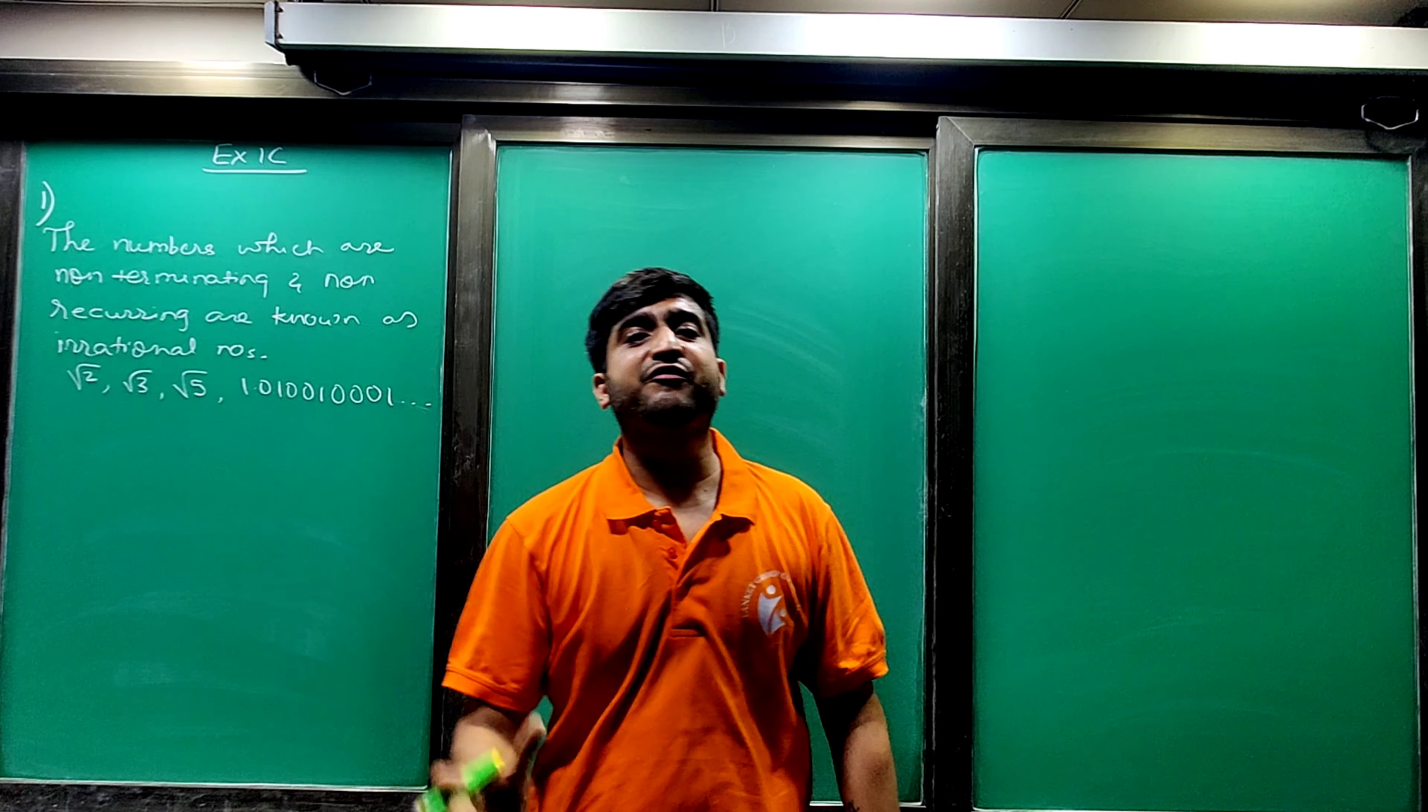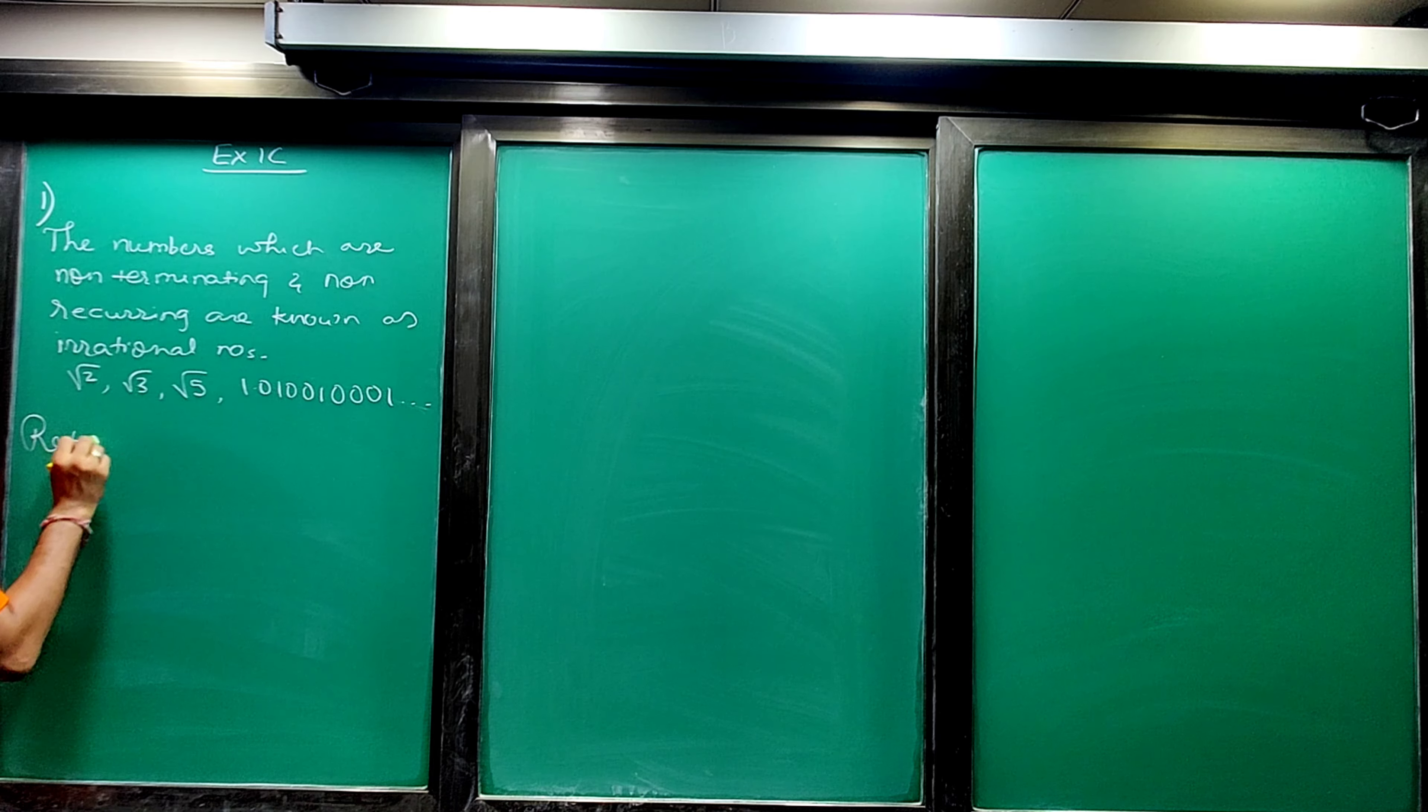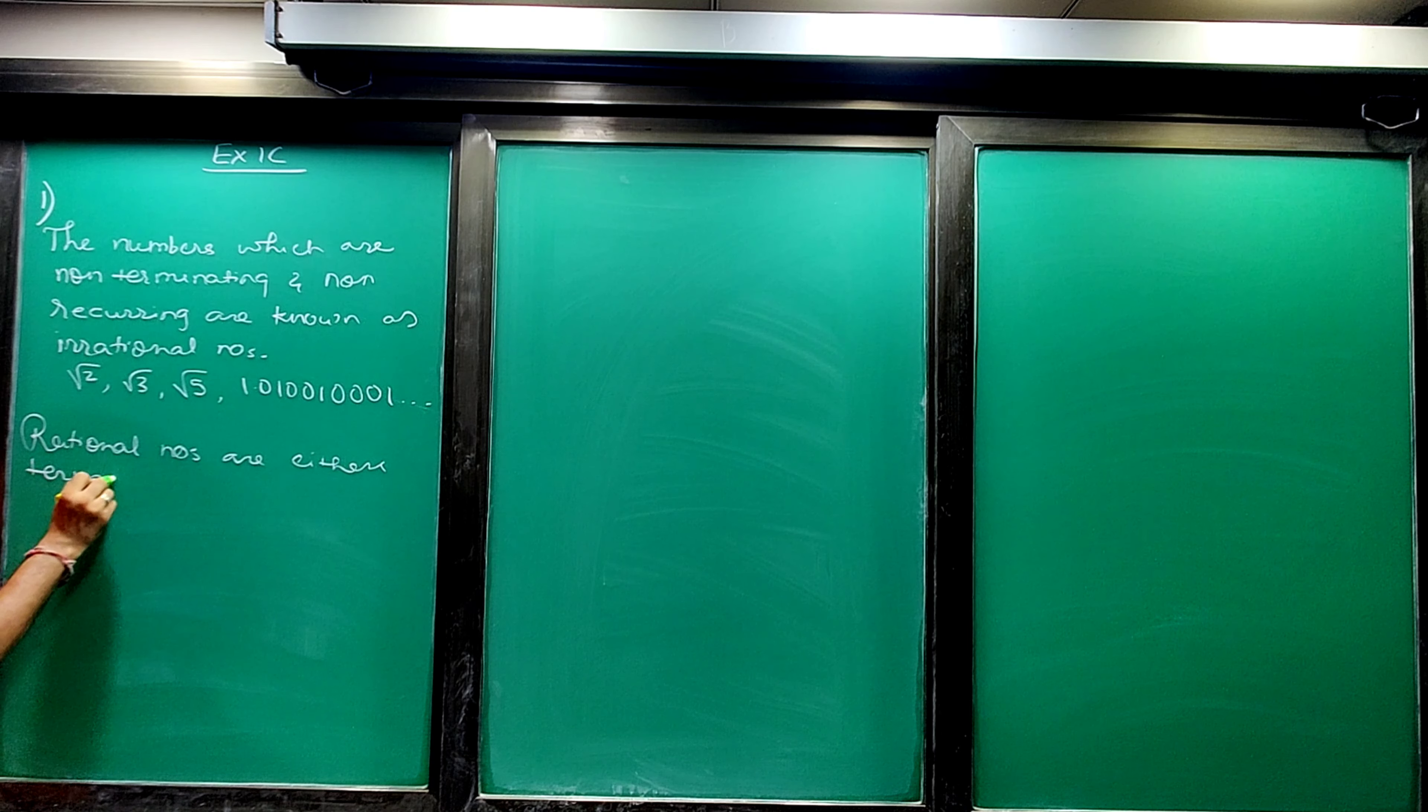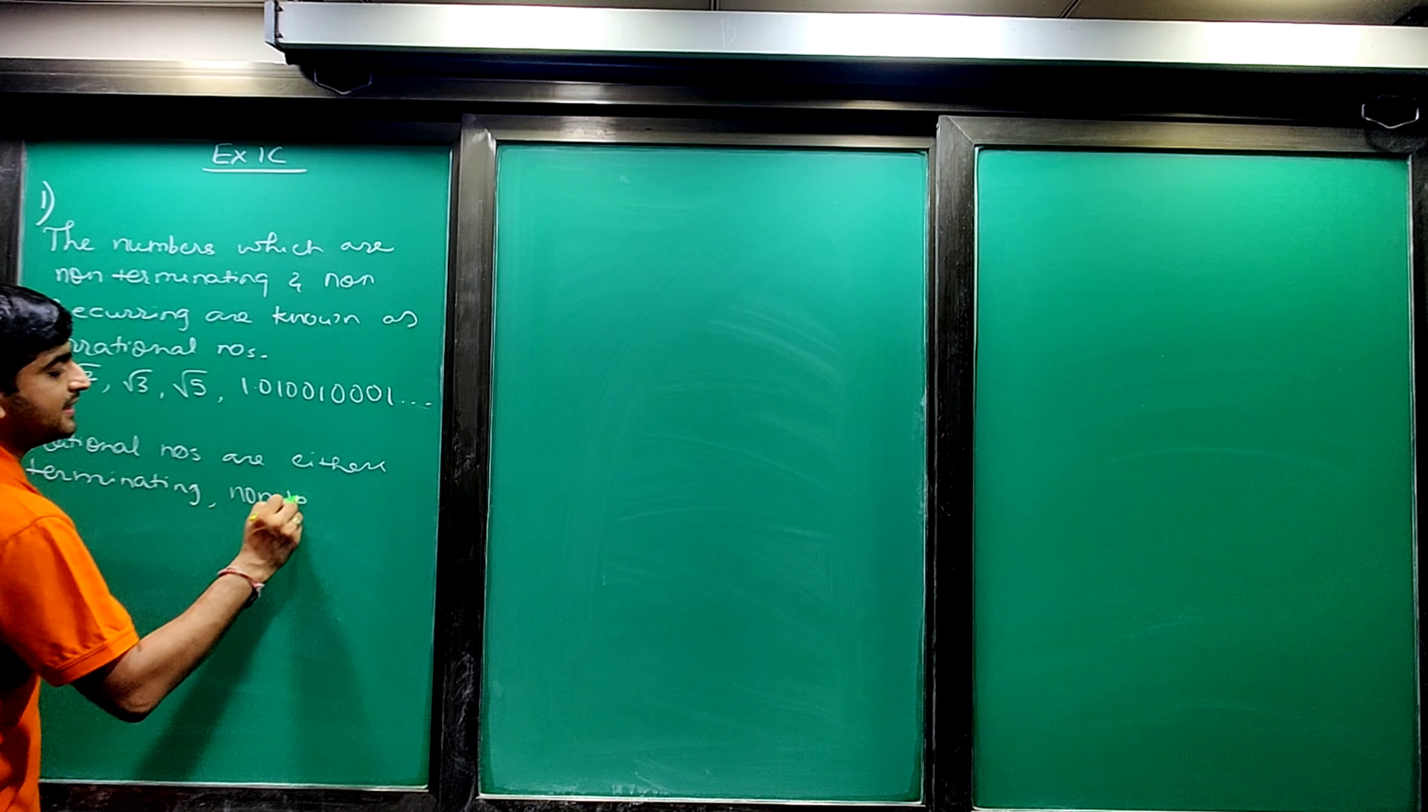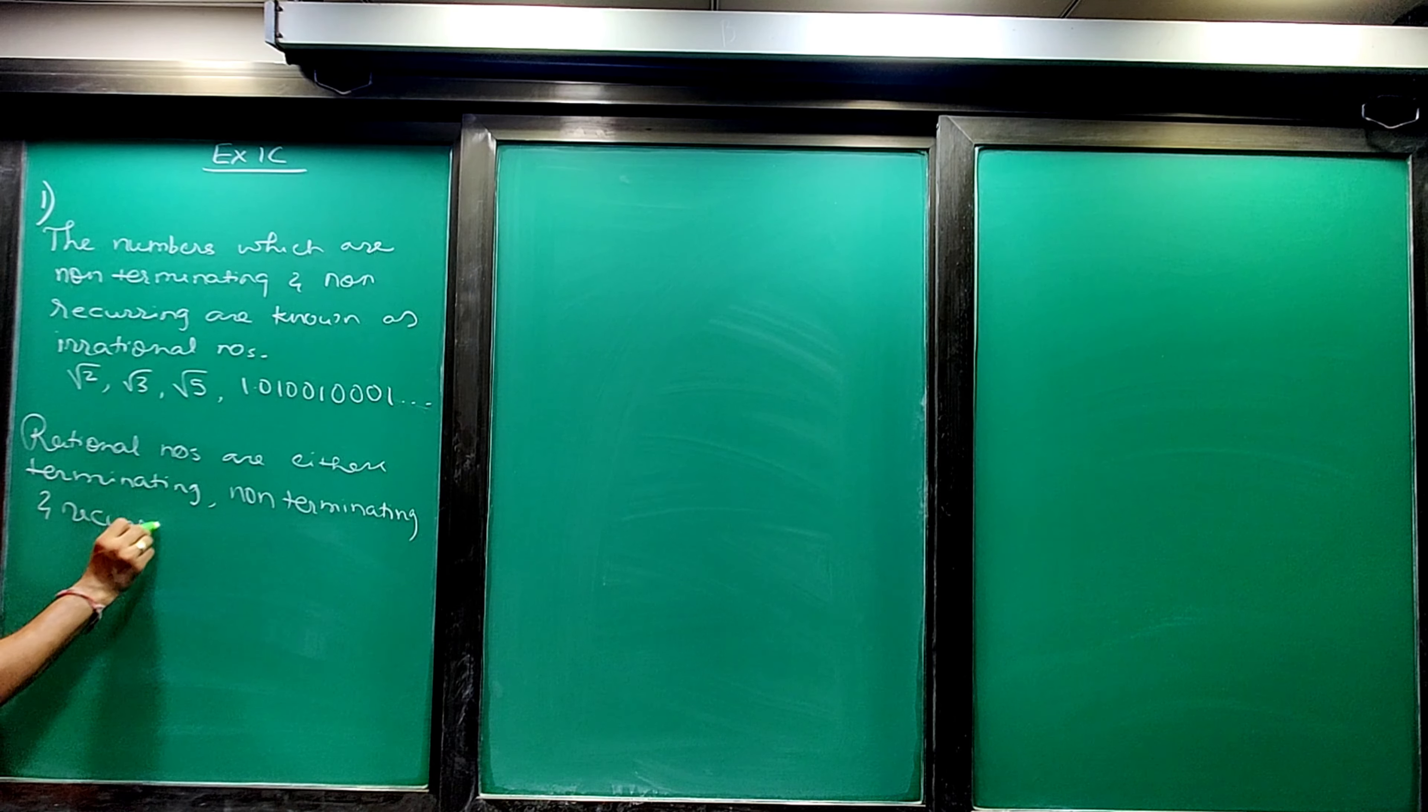How do they differ from rational numbers? Rational numbers are either terminating or non-terminating and recurring numbers.